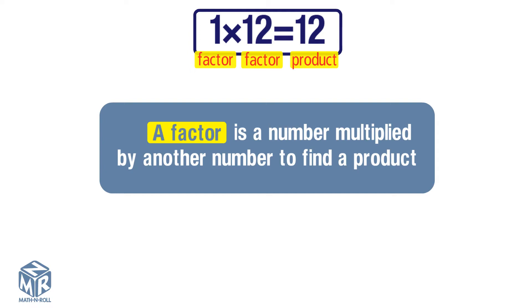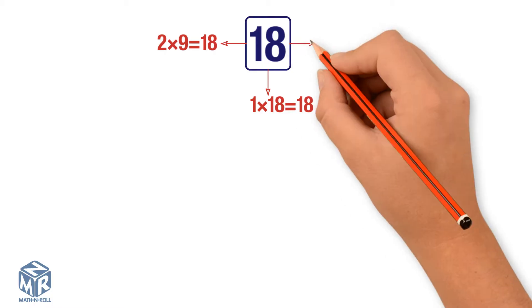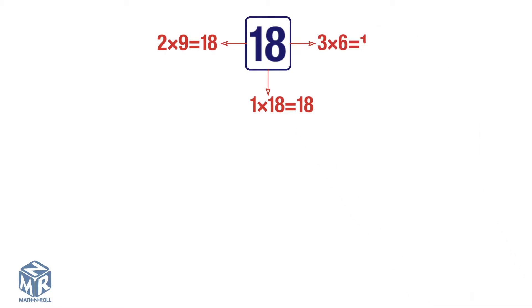Many numbers can be broken into factors in different ways. Let's take 18 for example. We can break up 18 into 1 times 18. We can also break it into 2 times 9 using the multiplication tables. We can also break 18 into 3 times 6.